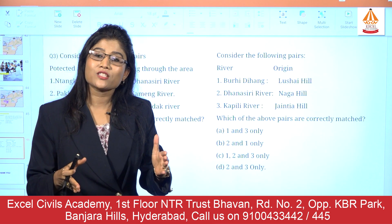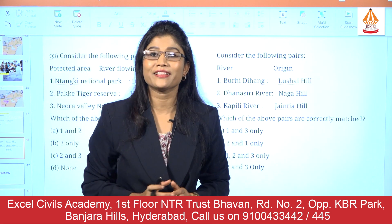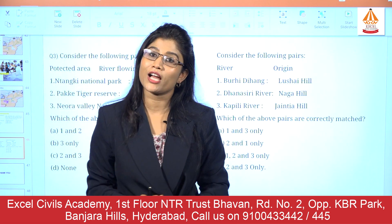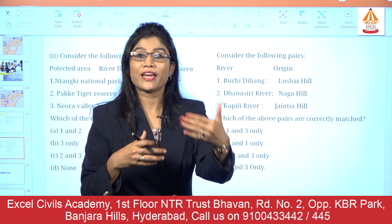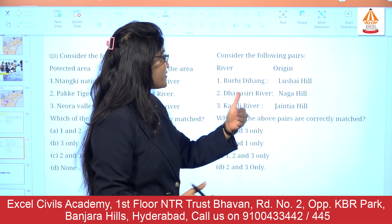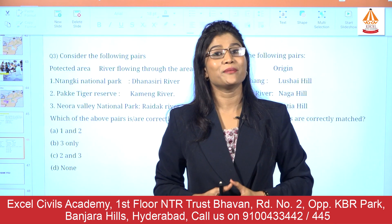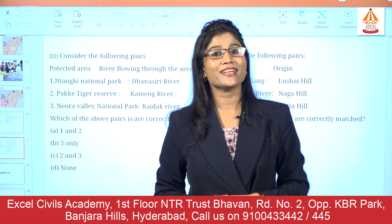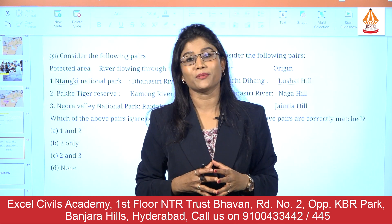The last question for today's session: consider the following pairs of rivers and their origin. The first pair is Buri Dihang river originating in the Lushai hills; the second pair is Dhaneseri river paired with the Naga Hills; and the third pair is Kapili river paired with the Jaintia hills. Which of the following pairs are correctly matched?